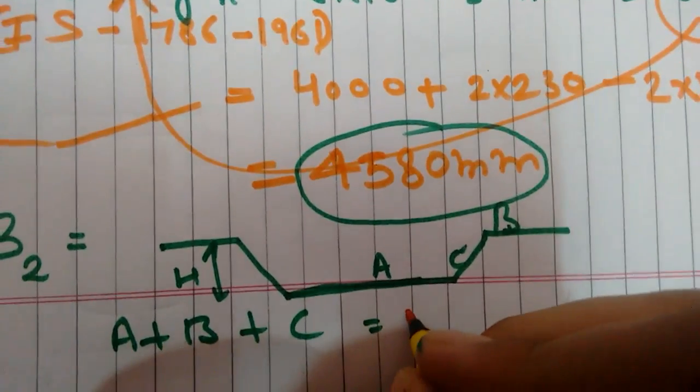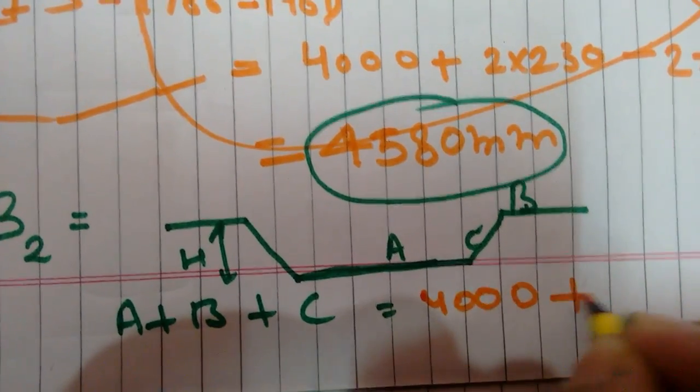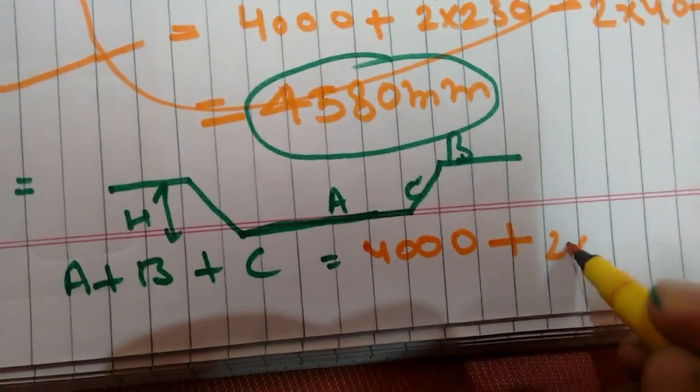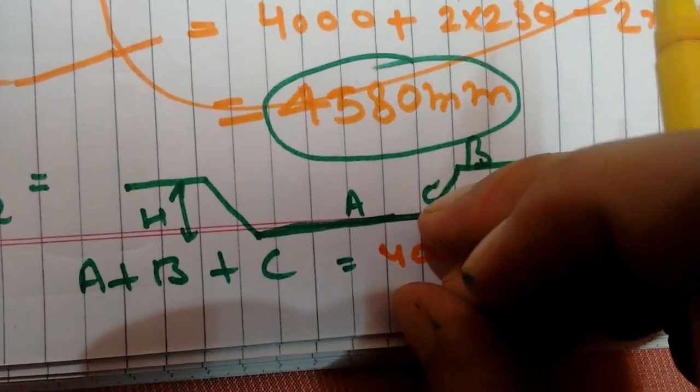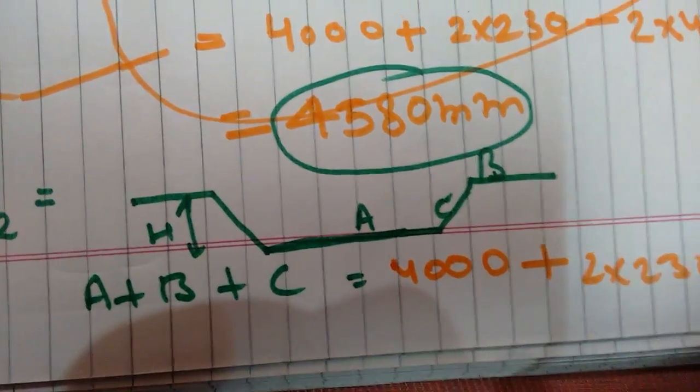That is 4000 plus B, which is 2 times 230. When we calculate C, that is minus 2 times 40.